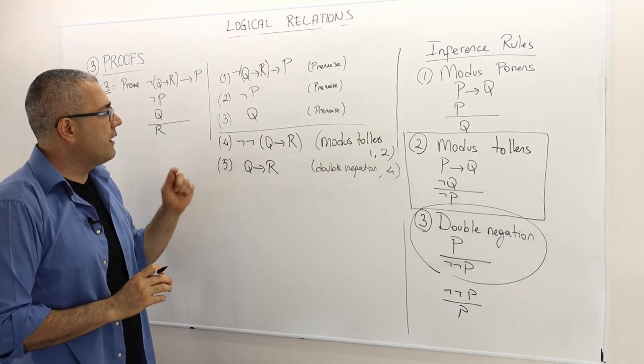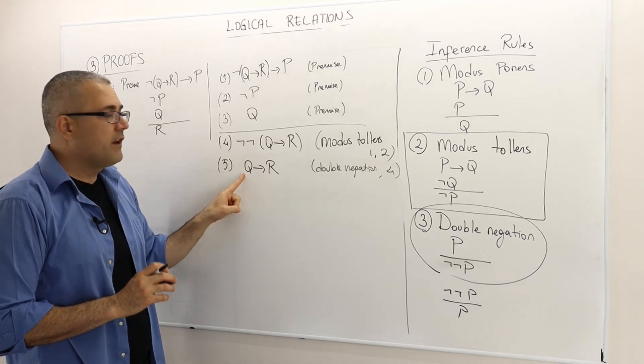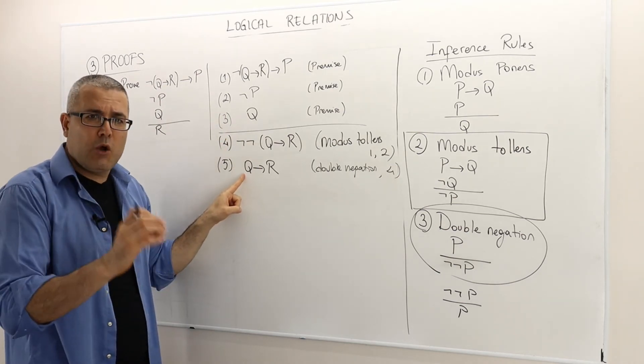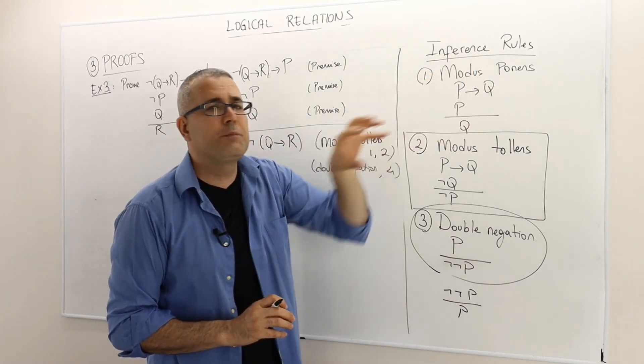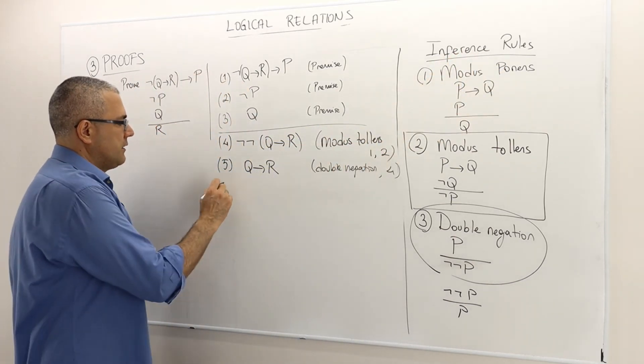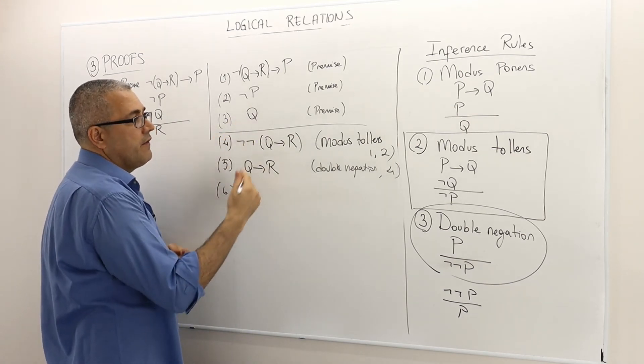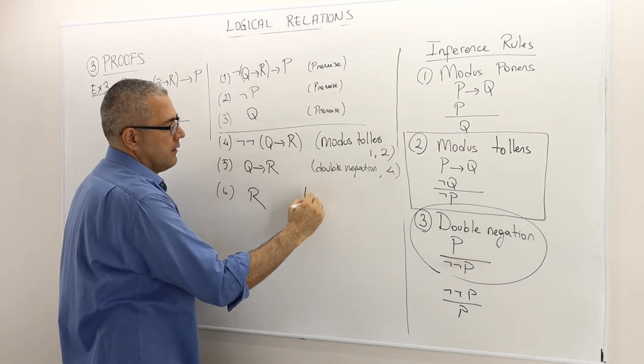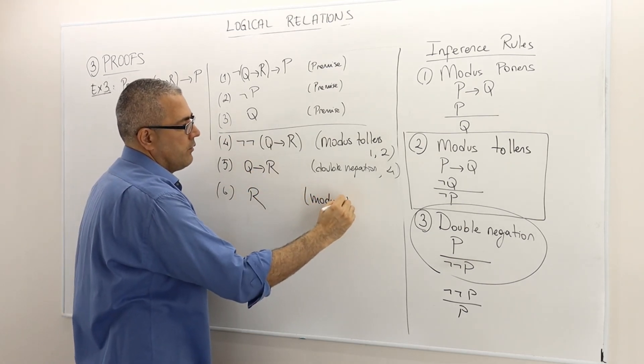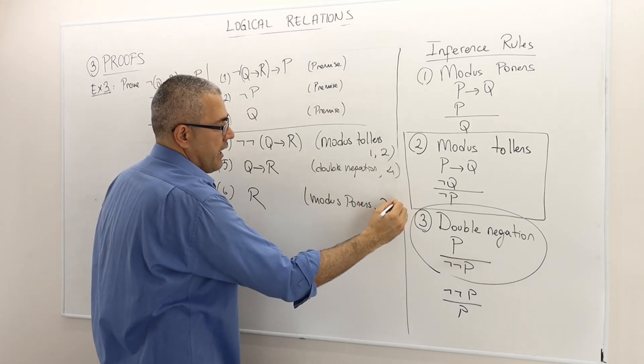So what do I have? I have premise number 3. I have a new conclusion, which I know it is true. Q implies R. So I have a modus ponens here. So 6 thanks to 3 and 5 and modus ponens, I have R modus ponens of the arguments 3 and 6.